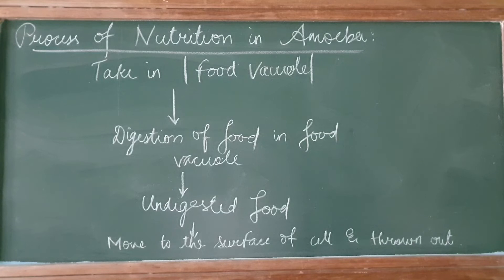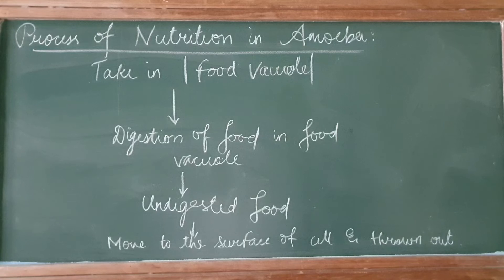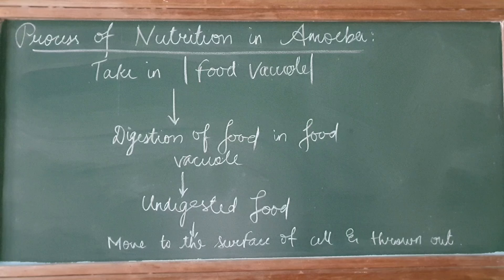Now the undigested food is moved to the surface of the cell and is thrown out. This is the simplest and easiest way to remember the process of nutrition in Amoeba by the method of flow chart. Thank you!